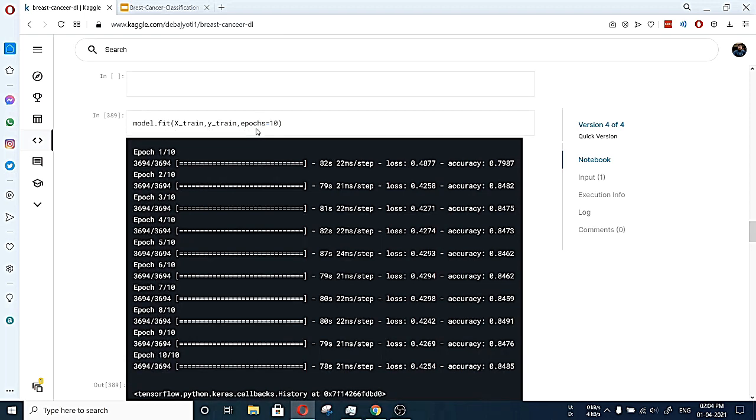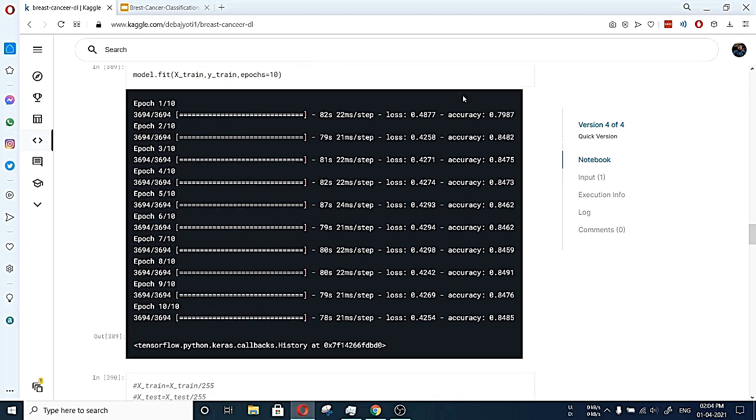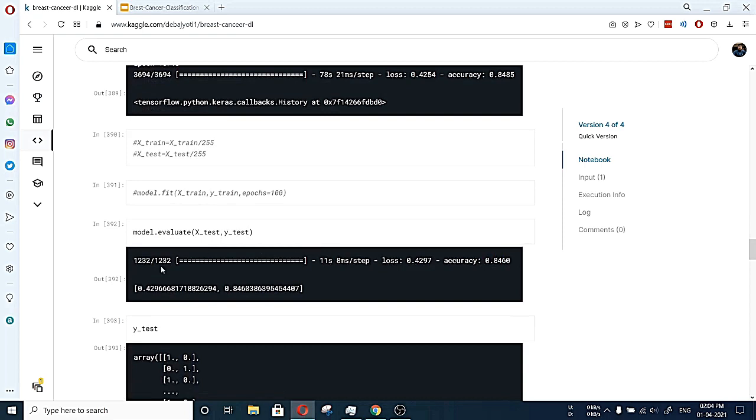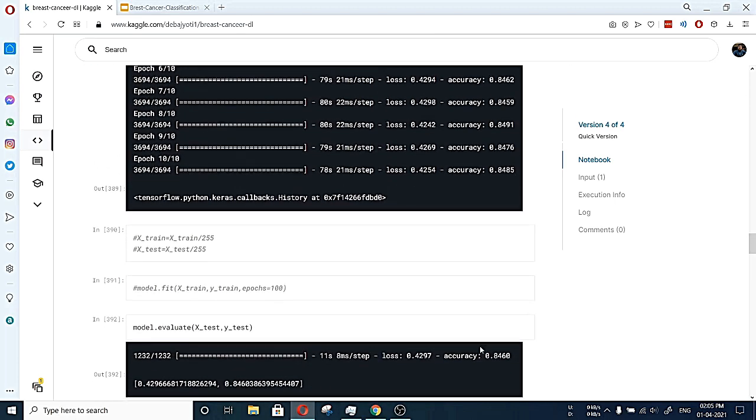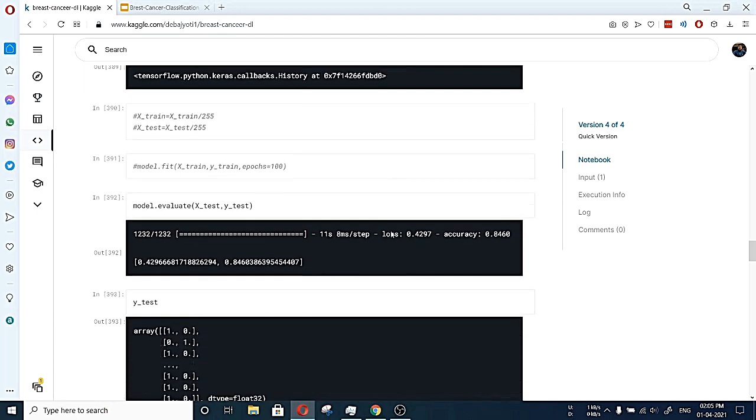Here we used model.fit to train our model. And we took epochs equals to 10 to overcome the overfitting issue. And in each epoch, you can see the accuracy increases. After that, at last, we got around 84.85%. Plus, the loss also was 42.54. The loss is also high. We have to check the parameters again and try different models. And again, we tested our model with the test dataset. We got accuracy around 84.6 and the loss is here also 42.97, which is nearly the same as the training loss and training accuracy.